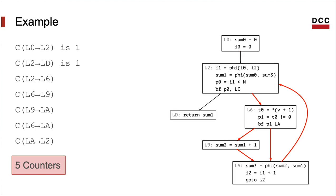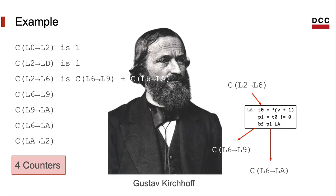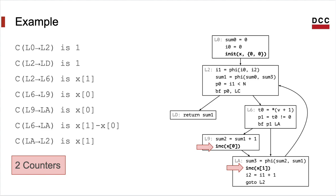However, we can do better. For instance, the first edge from L0 to L2 will be traversed only once, and same for the last edge from L2 to LD — no counter is needed for these edges. Furthermore, we can reconstruct counters as functions of other counters. For instance, L2 to L6 equals the sum of L6 to L9 plus L6 to LA. In other words, the flow entering a basic block should equal the flow leaving it — a well-formed profile abides by Kirchhoff's circuit law.